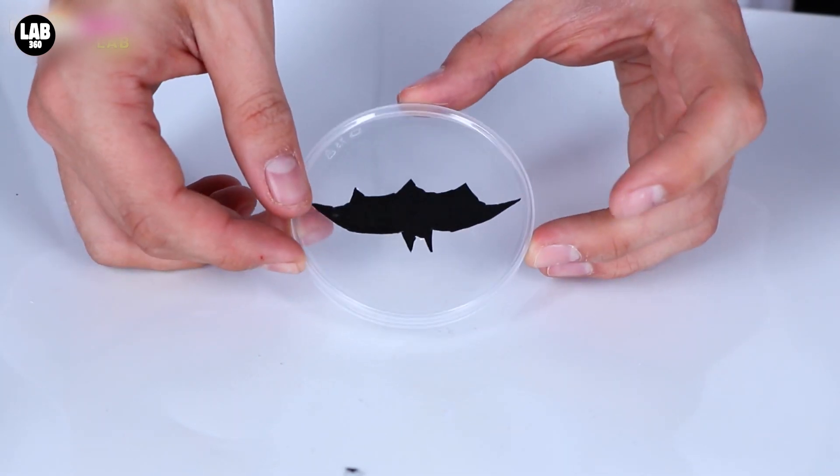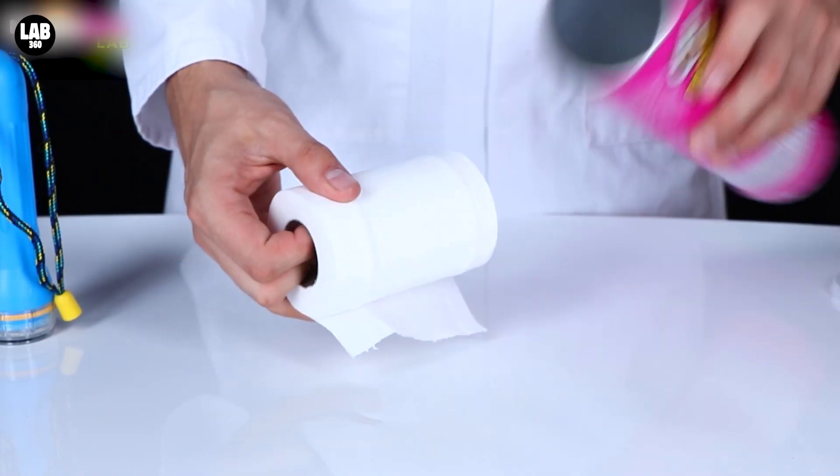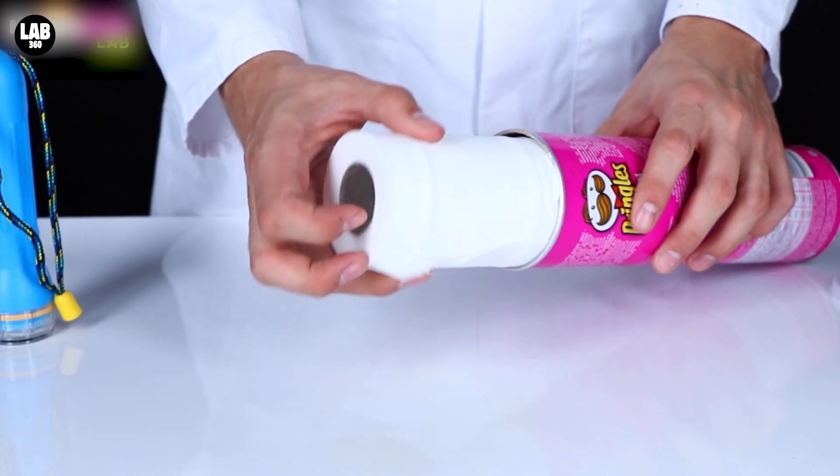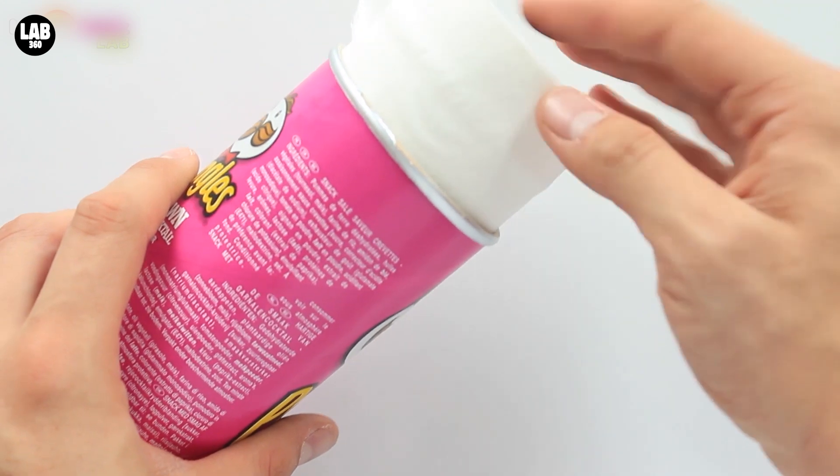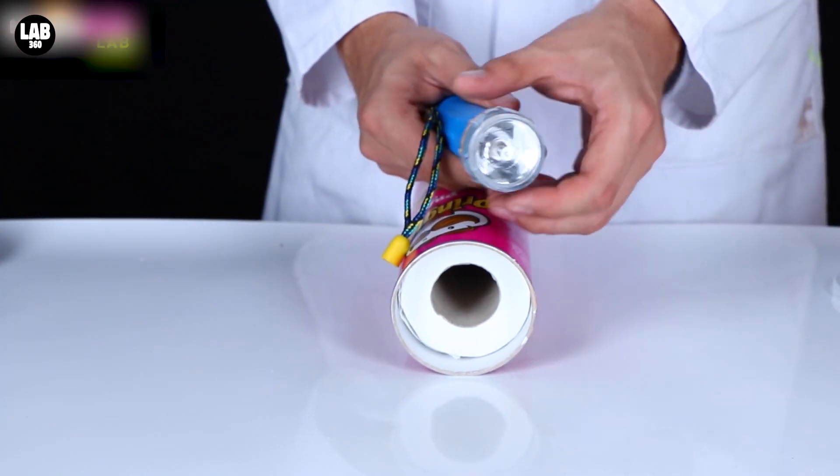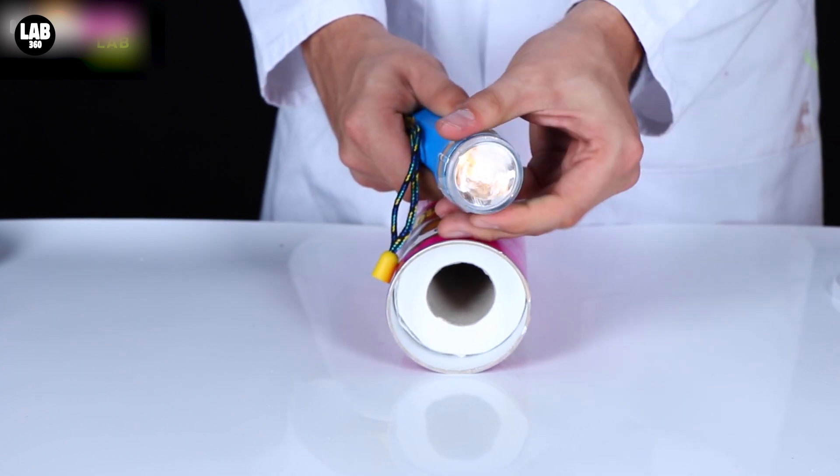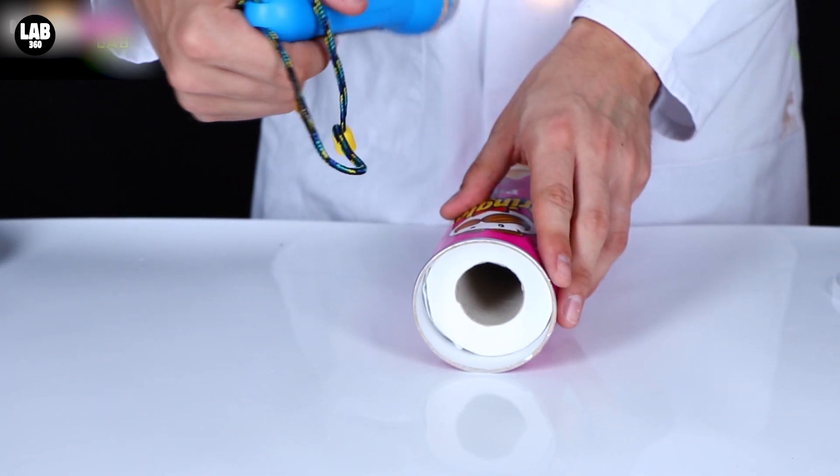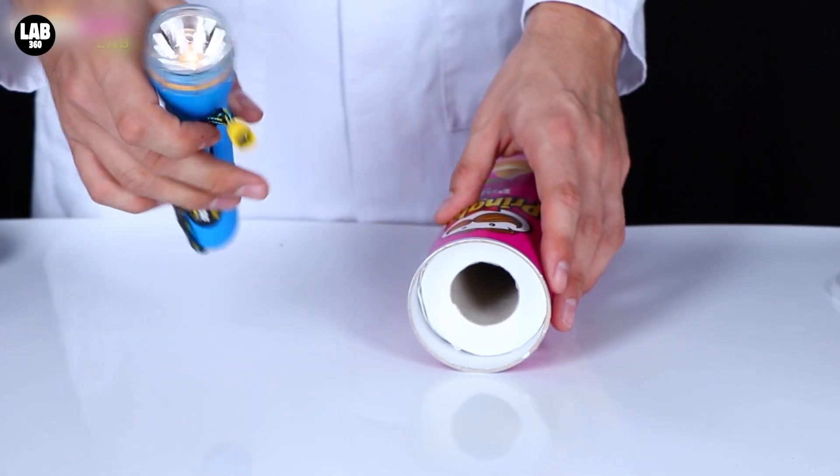Once that's done, you're going to need to pop your roll of toilet paper into the Pringles, and then sit your torch inside the centre. Make sure you turn it on before you put it inside. The toilet roll tube will help to hold the torch still.